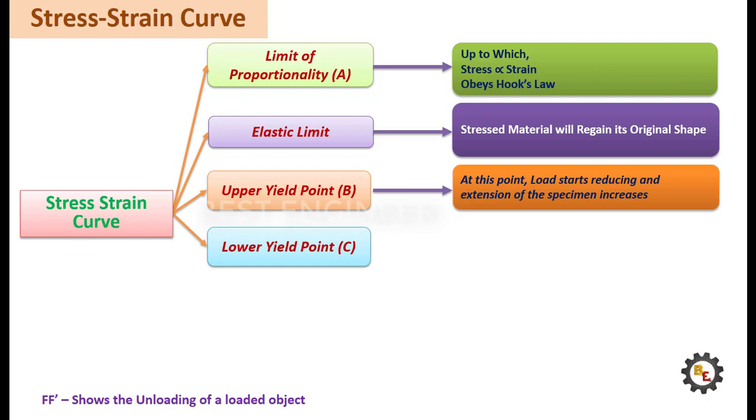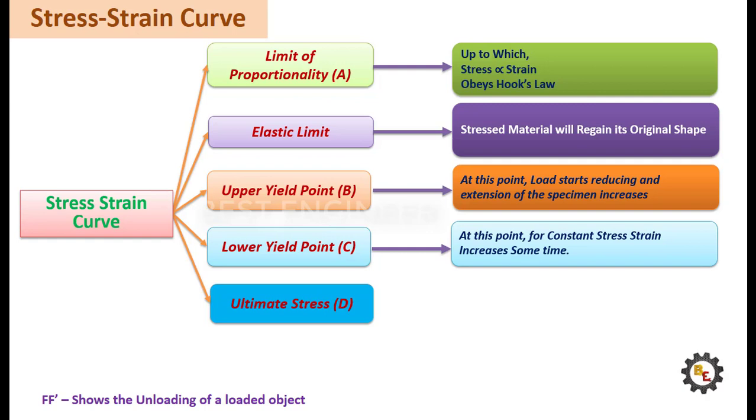Point C, lower yield point. For constant stress, strain increases some time. Point D, ultimate stress point. At this point, maximum stress the material can resist. From this point, cross section area reducing very fast.